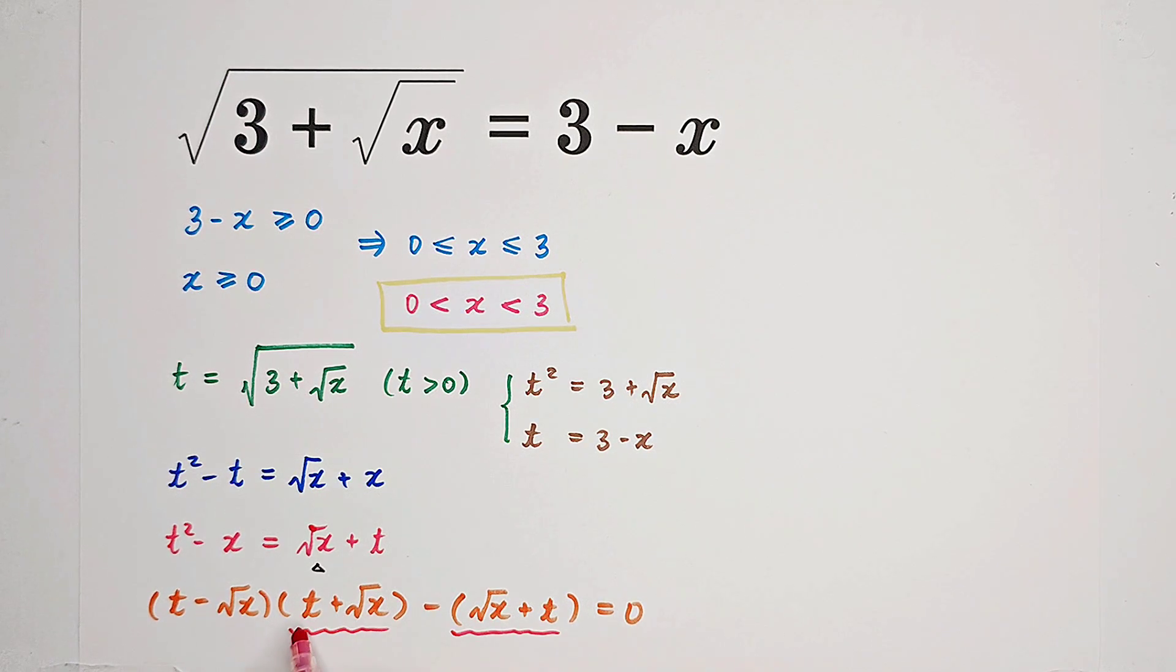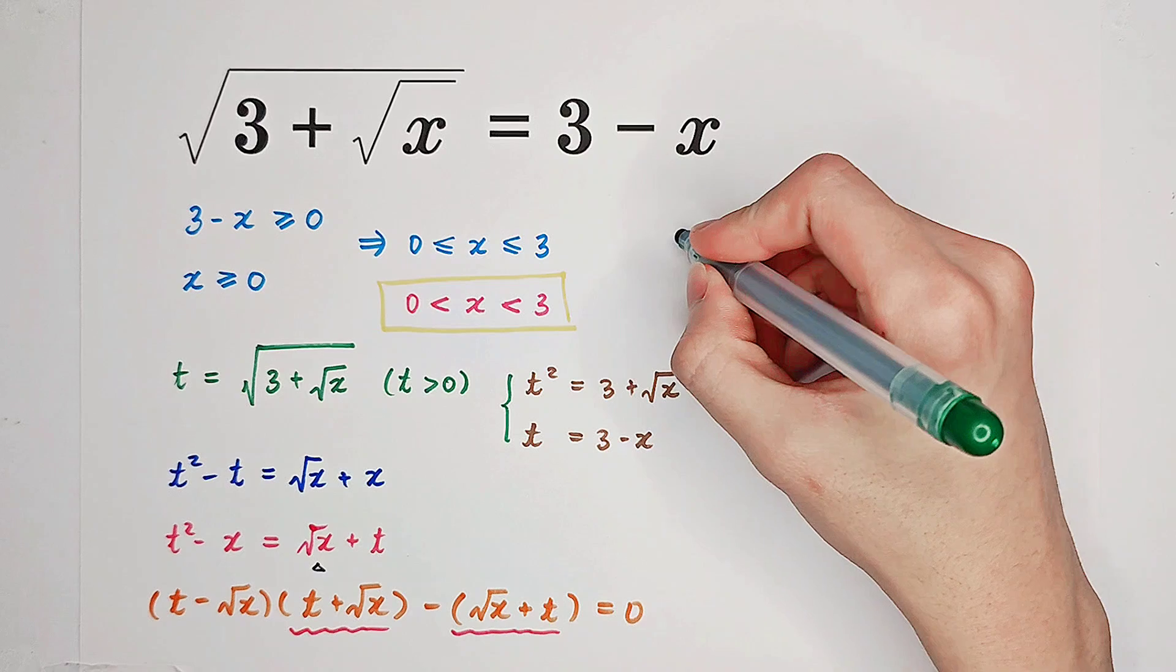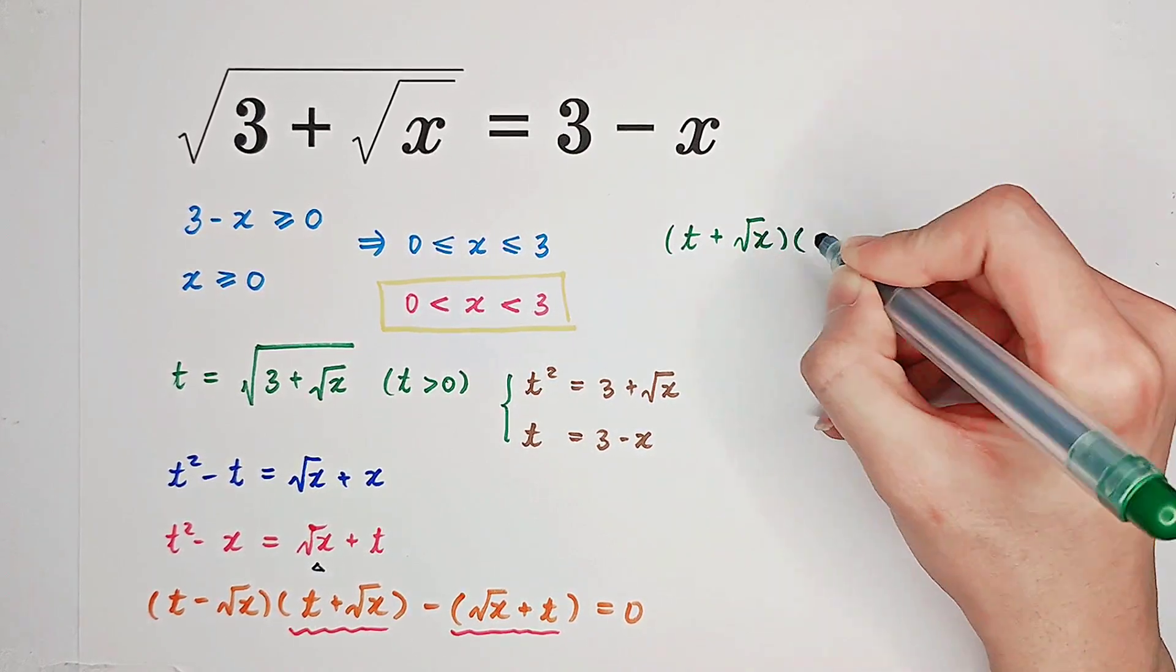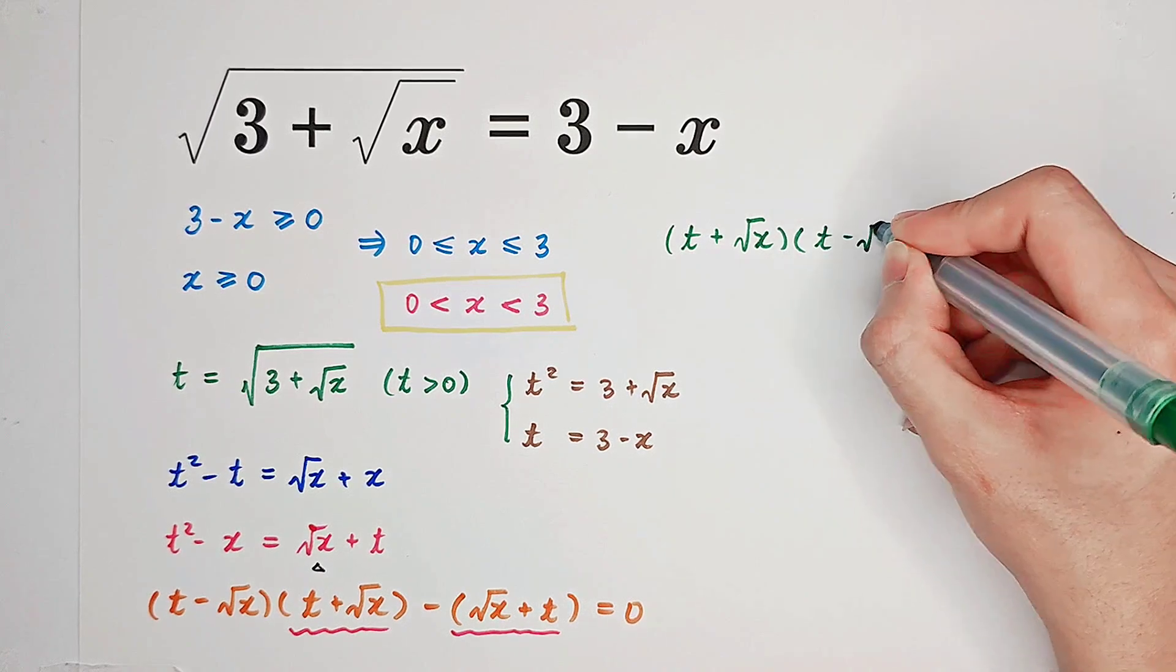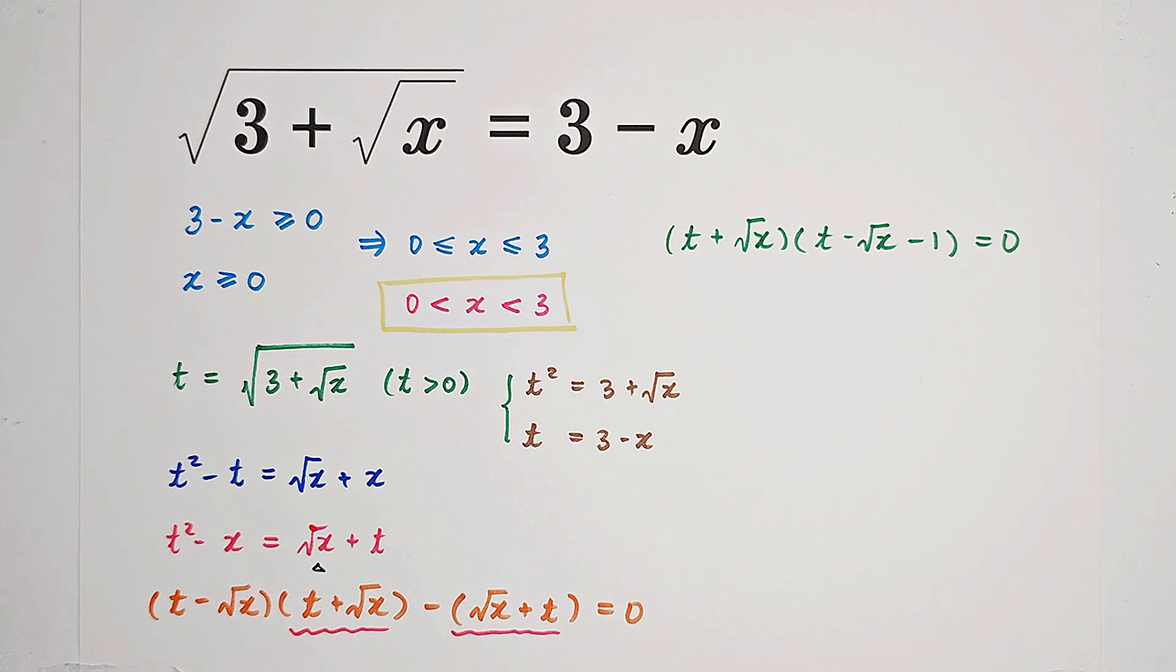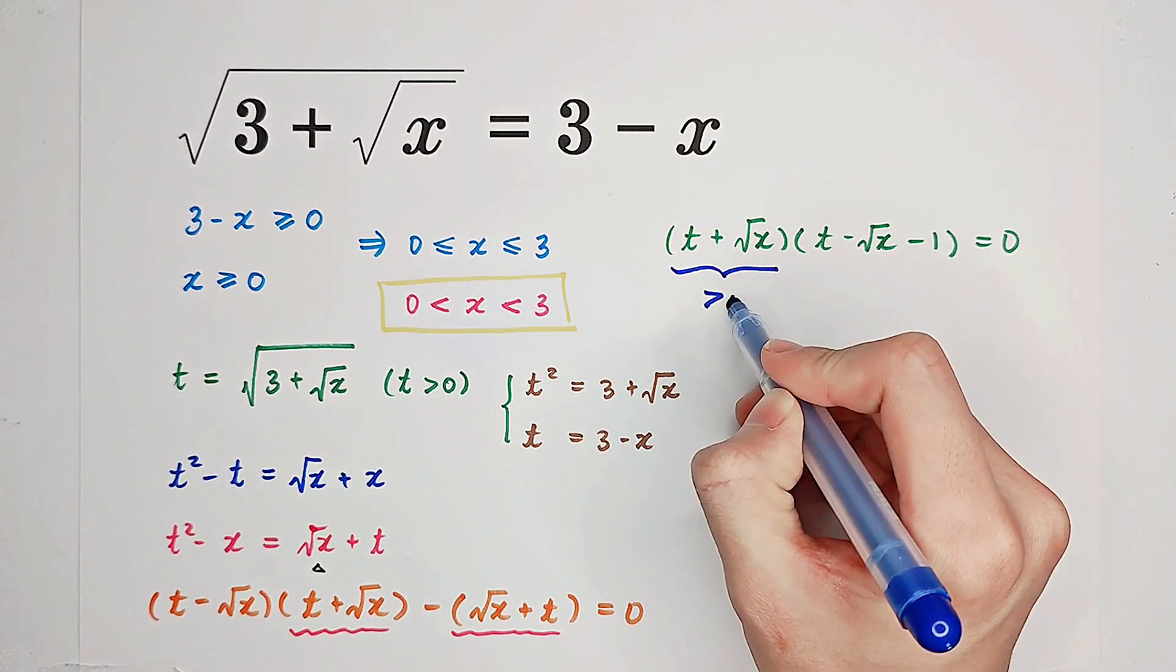Now you can notice that we have t plus square root of x here and also here. So check it out. t plus square root of x times t minus square root of x, then minus 1 equals 0. Because t is greater than 0, x as well. So this factor is greater than 0.